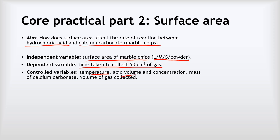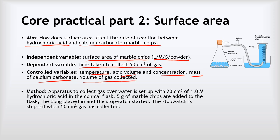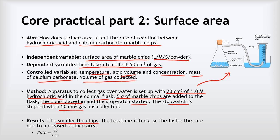Our controlled variables were temperature, acid volume and concentration, the mass of the calcium carbonate, and the volume of gas collected. For our method, we set up apparatus to collect gas over water in an upturned measuring cylinder. We placed 20 cm³ of 1.0 mol/dm³ hydrochloric acid in a conical flask, added 5 grams of marble chips, put the bung in place straight away to stop gas escaping, and started the stopwatch. We stopped it once 50 cm³ of gas had been collected. Our results showed that the smaller the marble chips, the less time it took — so the faster the reaction rate — due to the increased surface area. The rate was calculated as 50 (the volume collected) divided by the time.